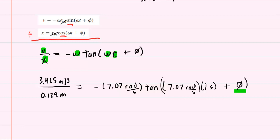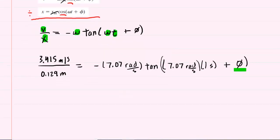We've gone ahead and plugged in the velocity, the position, the angular frequency twice, along with the given time. The only thing that we don't know is this phase constant, and it will be useful to us to solve for that. If we divide the terms on the left-hand side, we're going to get about 26.47. On the left side, we have negative 7.07 times the tangent of this quantity, multiplying 7.07 times one second there remains 7.07.